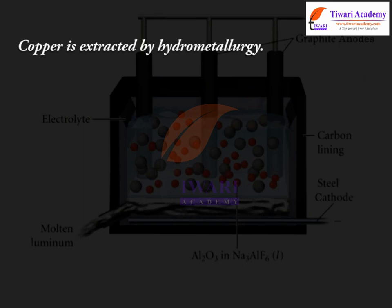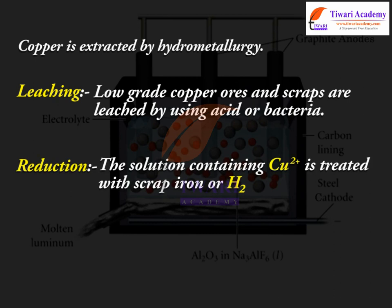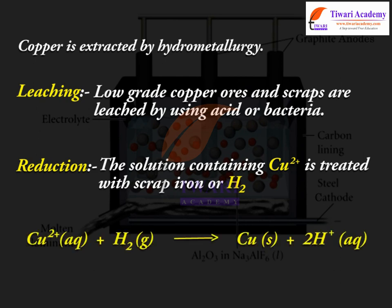Copper is extracted by hydrometallurgy. Leaching: low-grade copper ores and scraps are leached using acid or bacteria. Reduction: the solution containing Cu²⁺ is treated with scrap iron or H₂. Cu²⁺(aq) + H₂(g) → Cu + 2H⁺(aq).